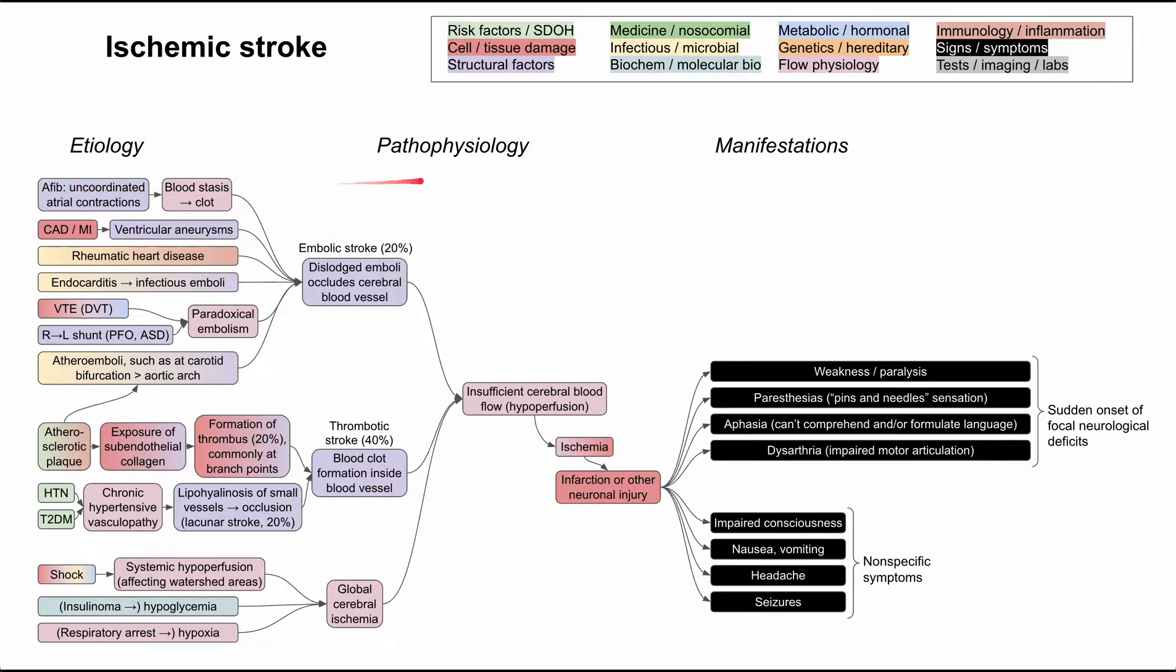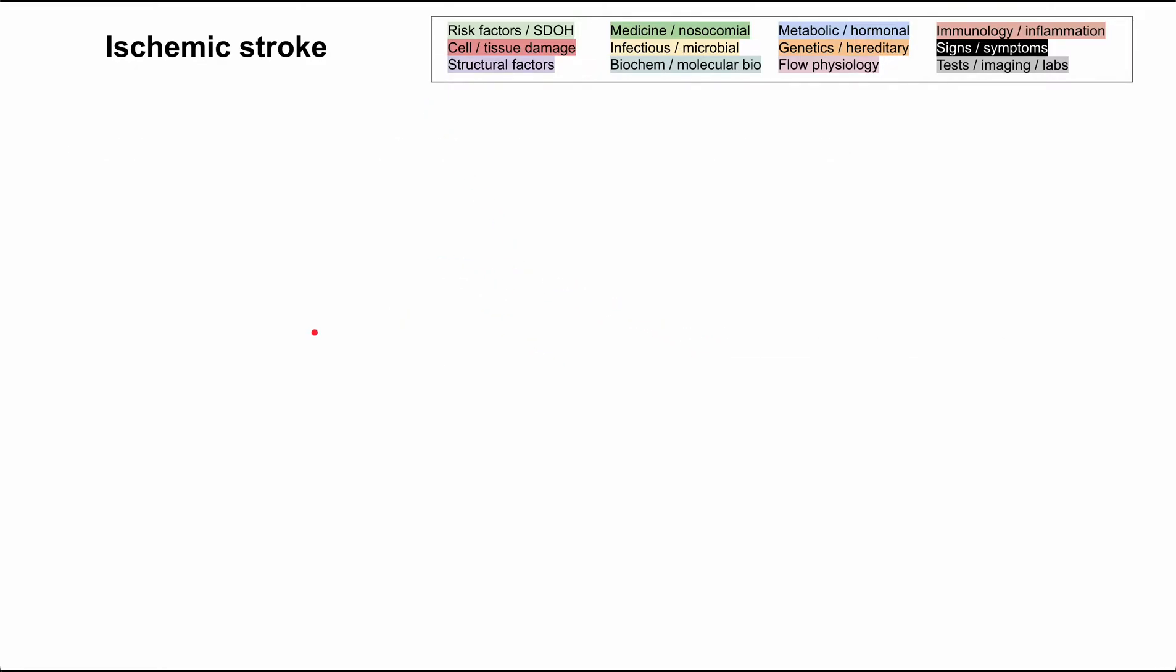I'll be talking about the etiologies, the pathophysiology, and the manifestations of ischemic strokes. And as in all of these flowcharts, each of these boxes is color-coded according to this legend that you see up here. I'll be clearing all of these boxes and talking through them one by one.